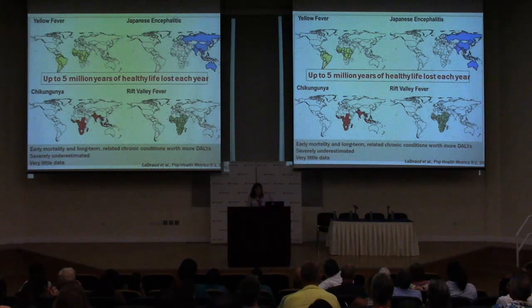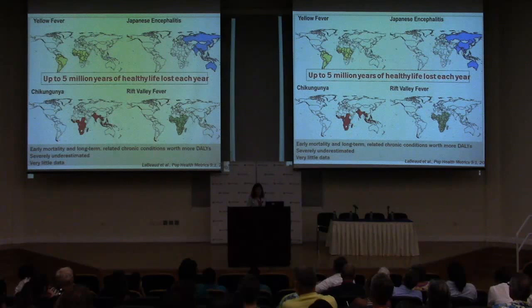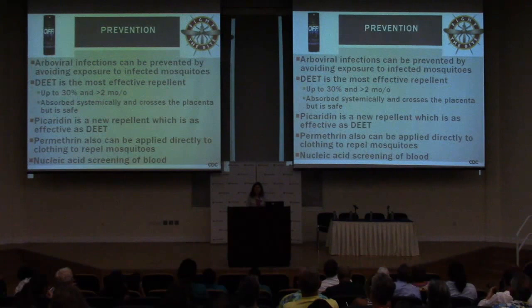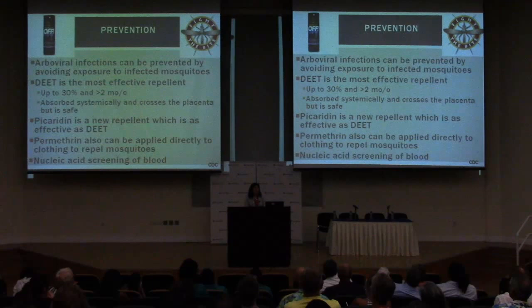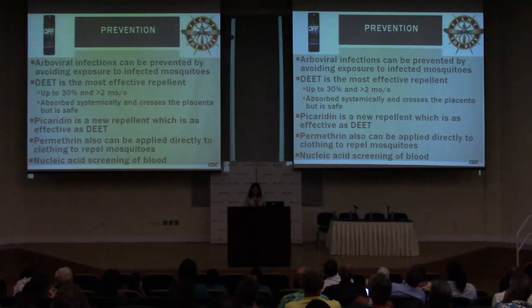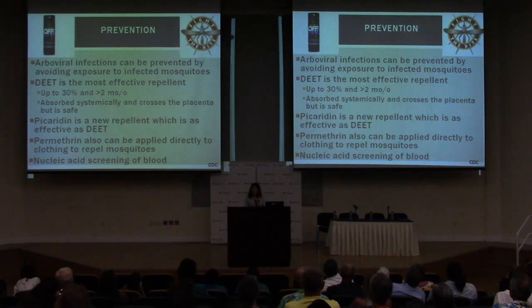The data here is very scanty and these infections are generally severely underestimated worldwide. How do we prevent chikungunya? You can only prevent it by preventing the mosquito bite. Repellent is a good way — DEET up to about 30% is safe and can be used in children two months and older; it is absorbed systemically and crosses the placenta but is considered safe. Picaridin is another repellent reportedly as effective as DEET. You can also spray clothes with permethrin to repel mosquitoes.